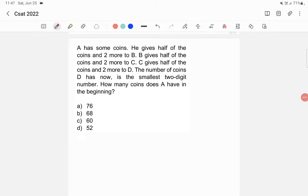A has some coins. He gives half of the coins and two more to B. B gives half of the coins and two more to C. C gives half of the coins and two more to D. The number of coins D has is the smallest two-digit number. We know that the smallest two-digit number is 10, so D has 10 coins.